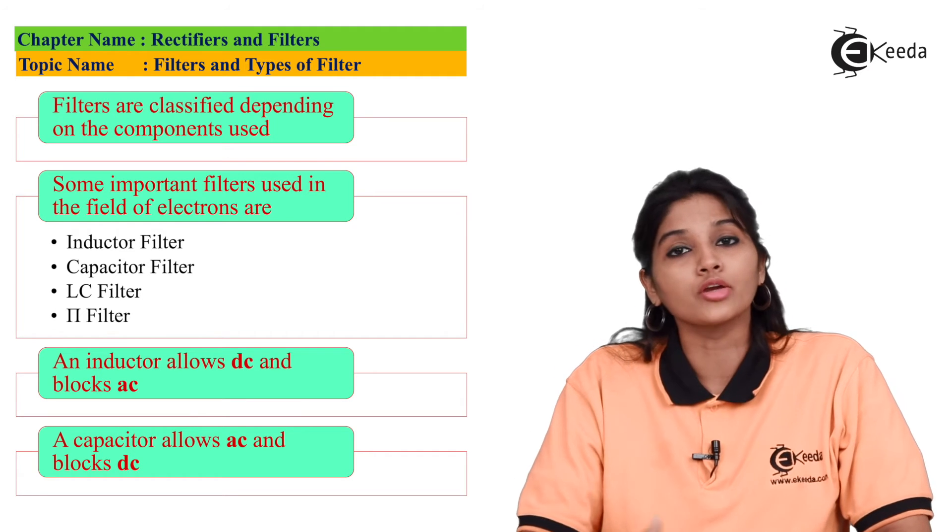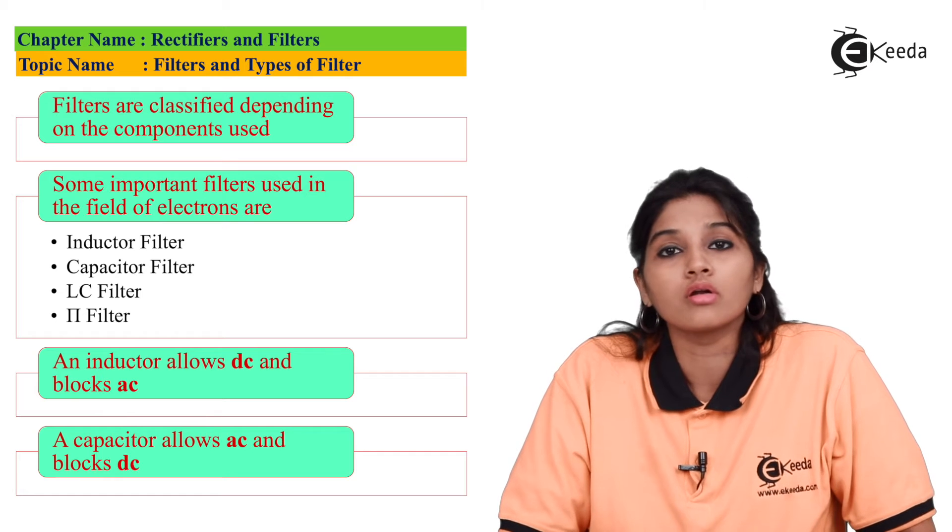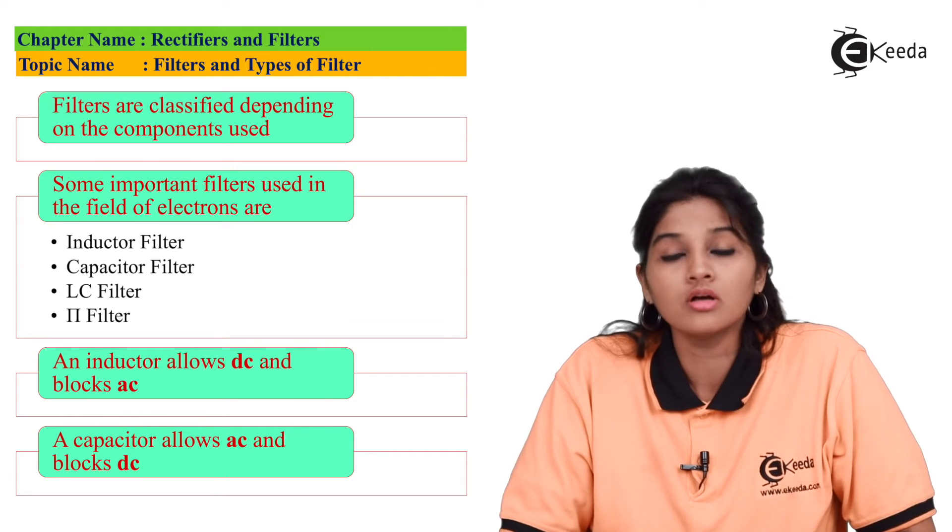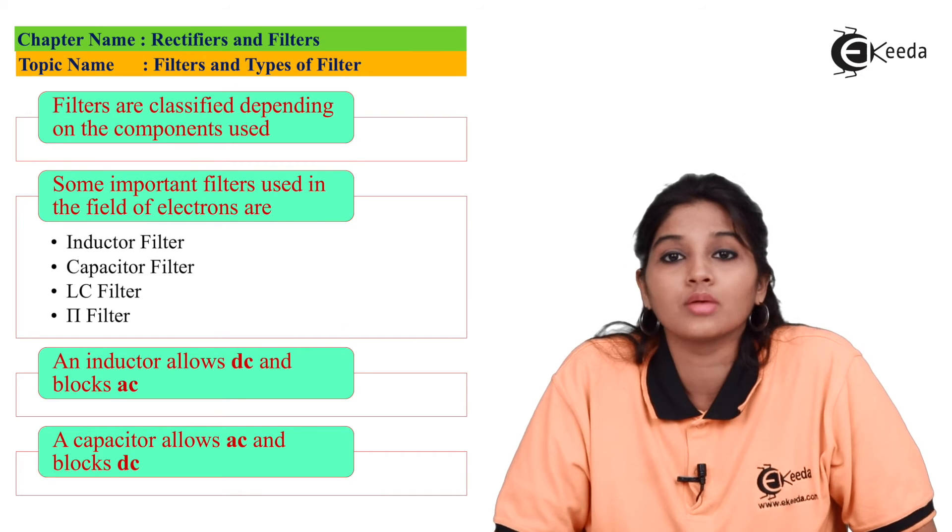So this DC signal can be applied to the electronic circuit for its working. So I hope you understand this video for filter and types of filter. So thank you very much for watching this video. Stay tuned to Ikeda. Subscribe Ikeda. Thank you.